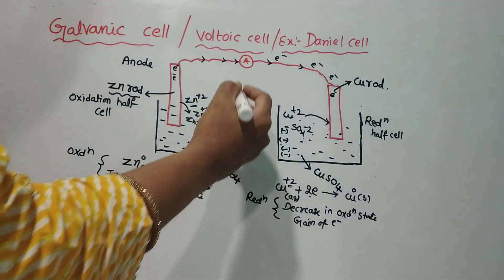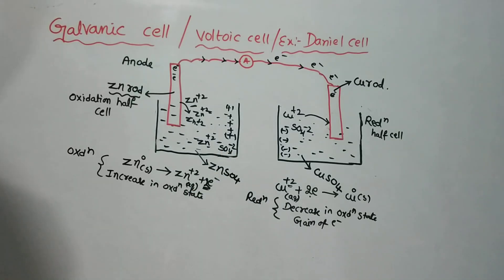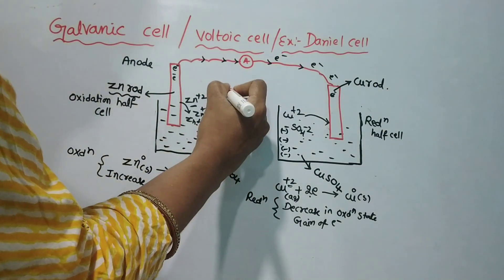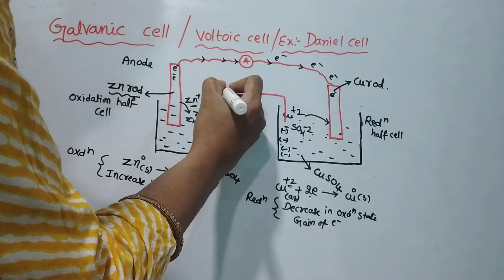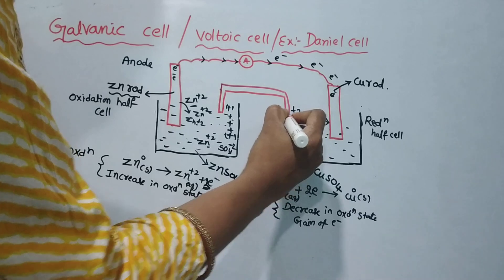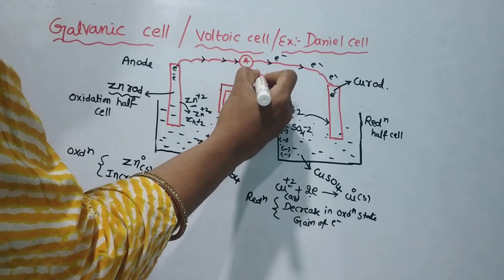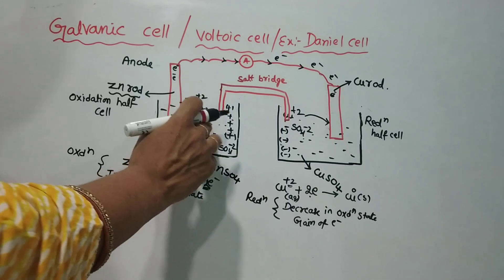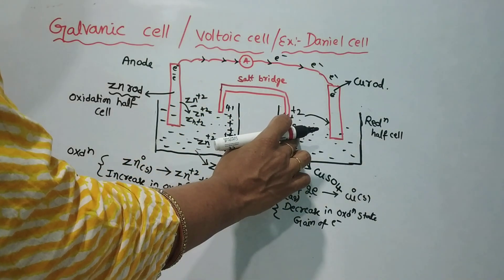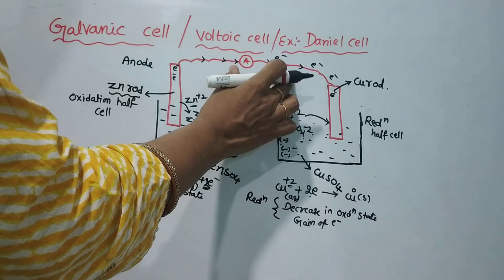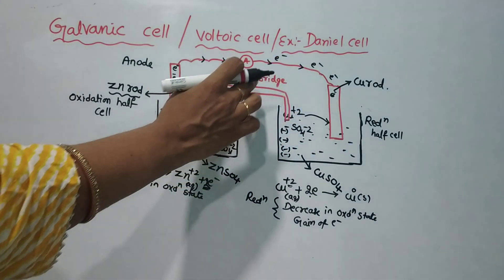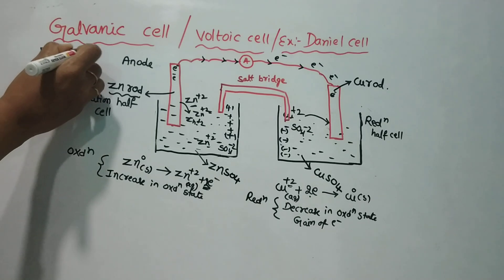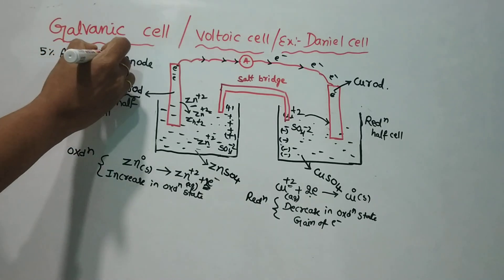We will now look at the salt bridge. We will change the condition using a salt bridge. The salt bridge is an inverted U-tube — a glass tube in the shape of an inverted U. It is filled with 5% agar-agar gel, which is a plant-based gel.